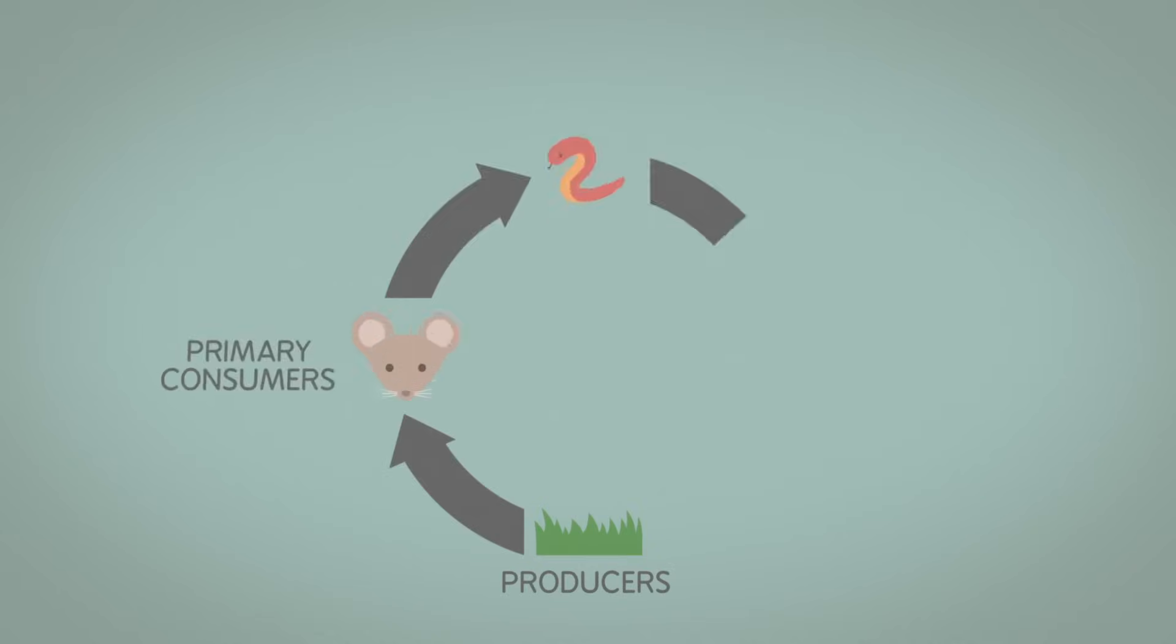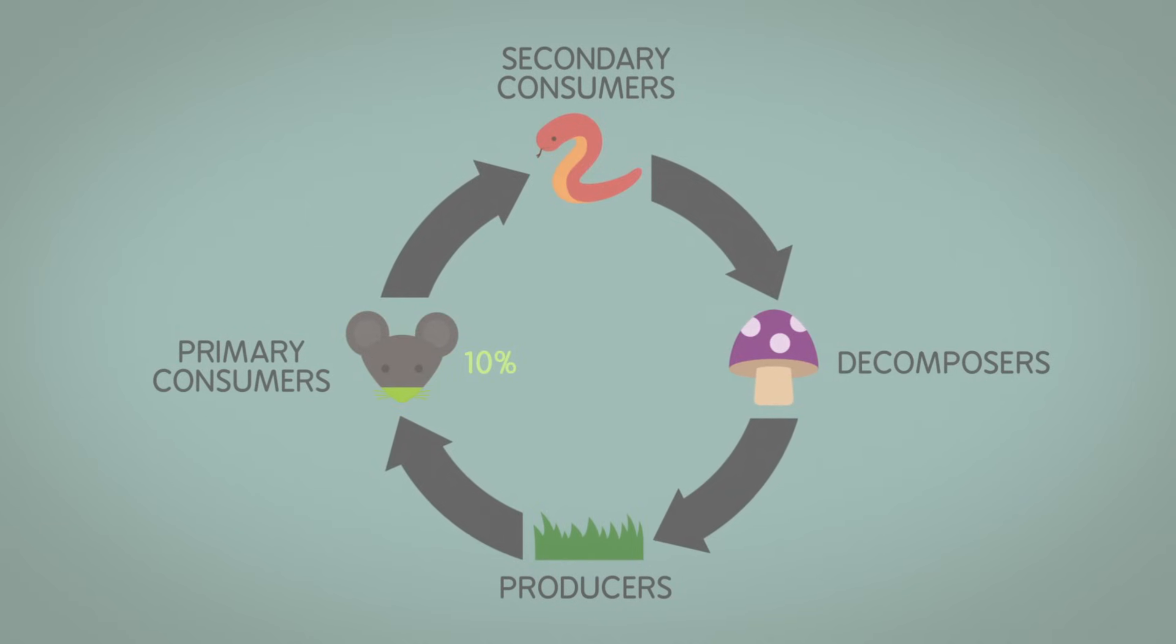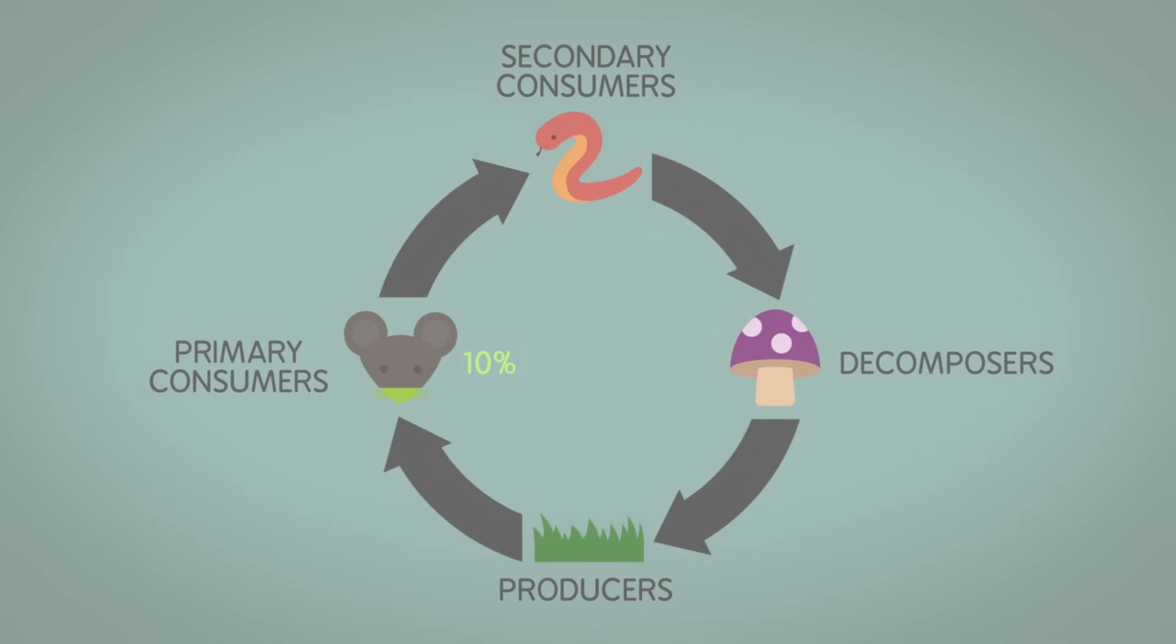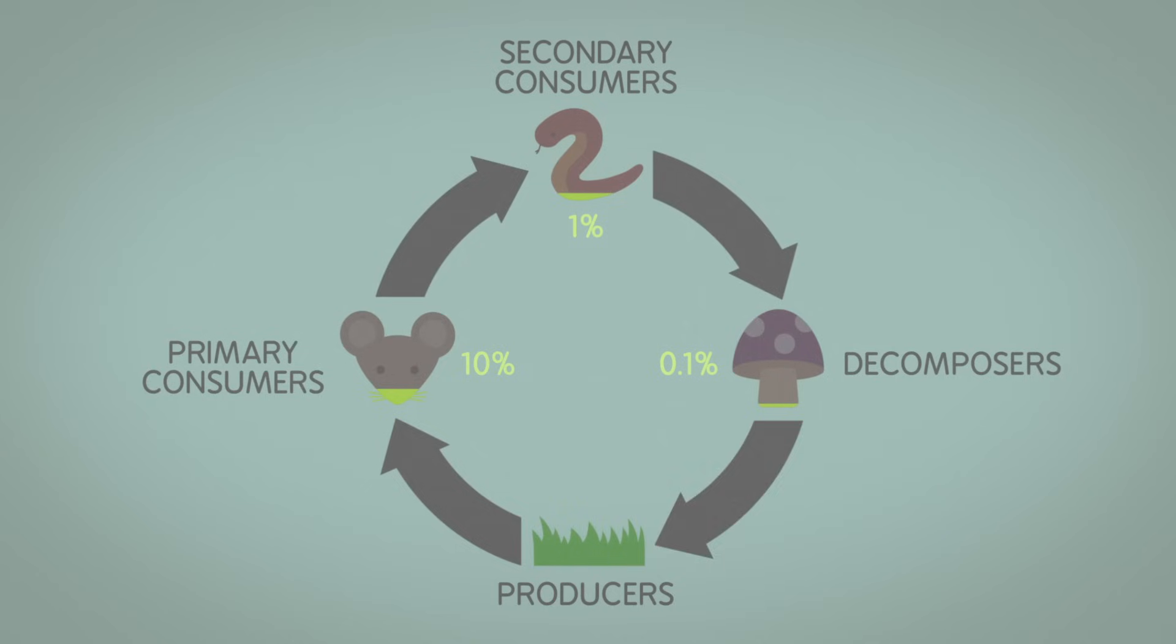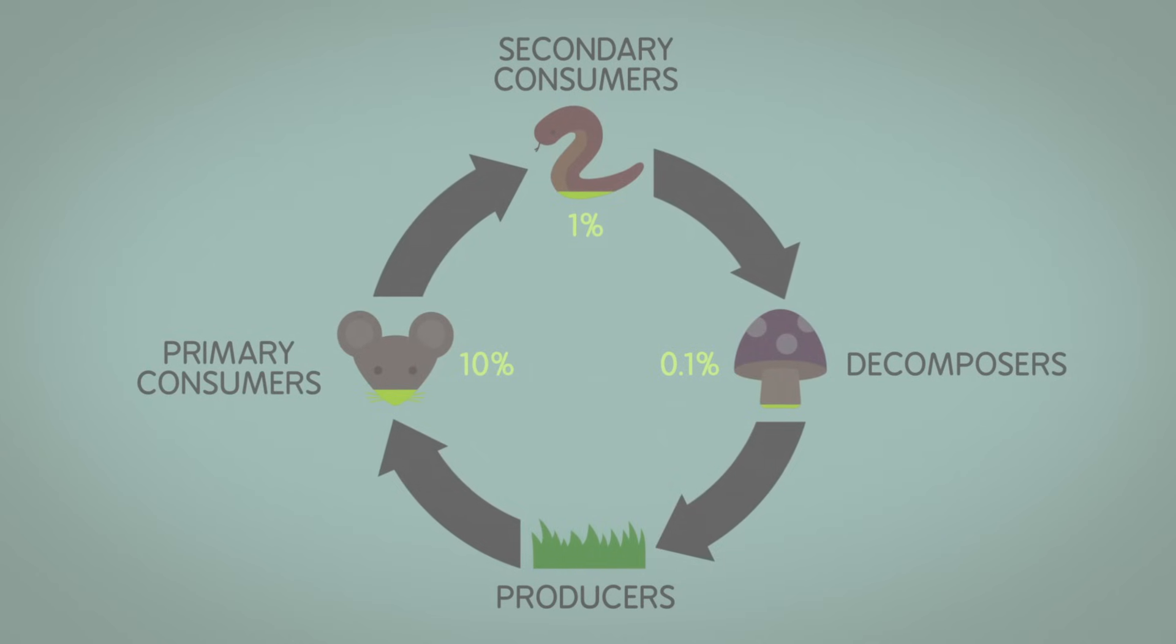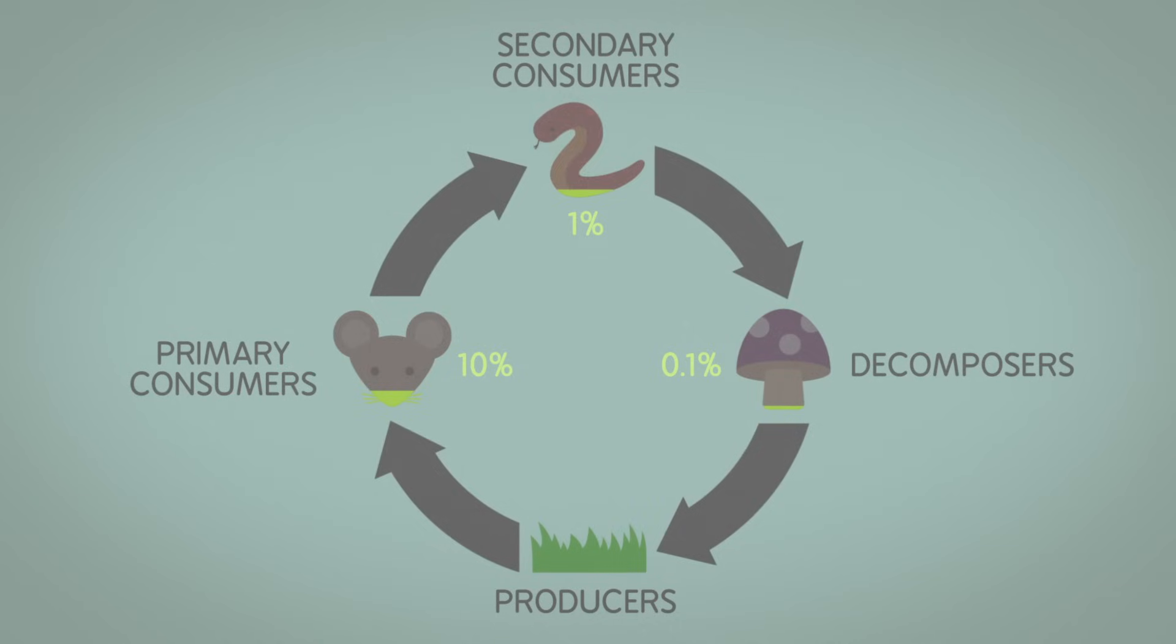Now, as plants are eaten by primary consumers, only about 10% of their total energy is passed on to the next level. Since energy can only flow in one direction in a food chain, from producers onto consumers and decomposers, an organism that eats lower on the food chain is more efficient than one higher up.